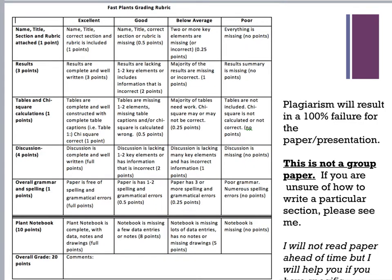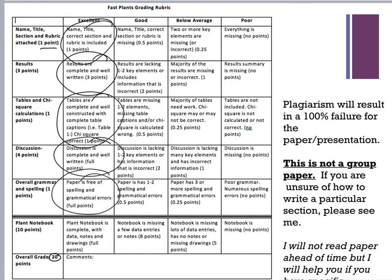Here is your rubric — this is how you're going to get your 20 points. For putting your name, the title, the section, and having the rubric attached, you get one point just for doing that. If you follow all of these boxes, which I will circle, you're going to get full points and a 20. This rubric will be up on Brightspace.